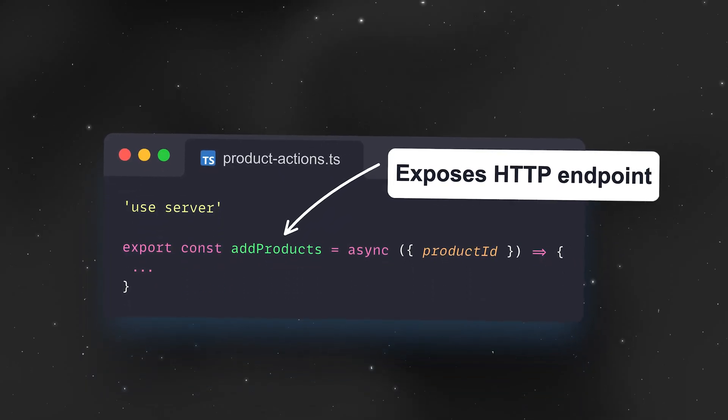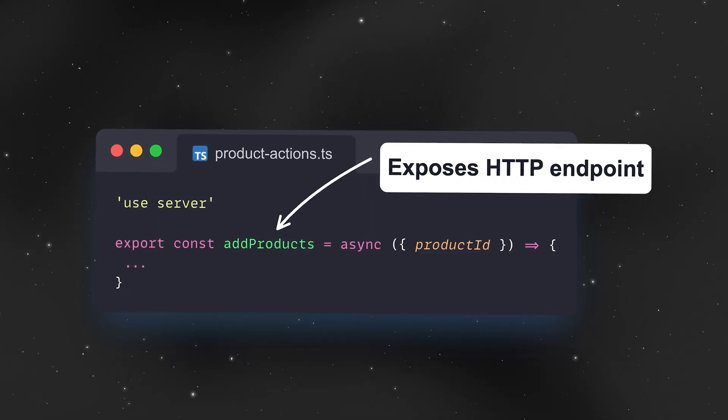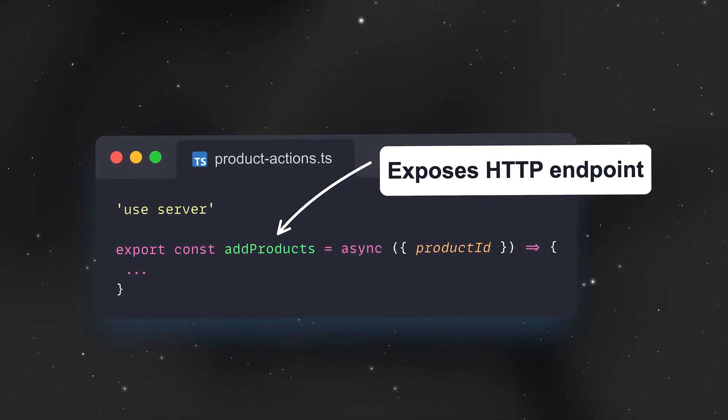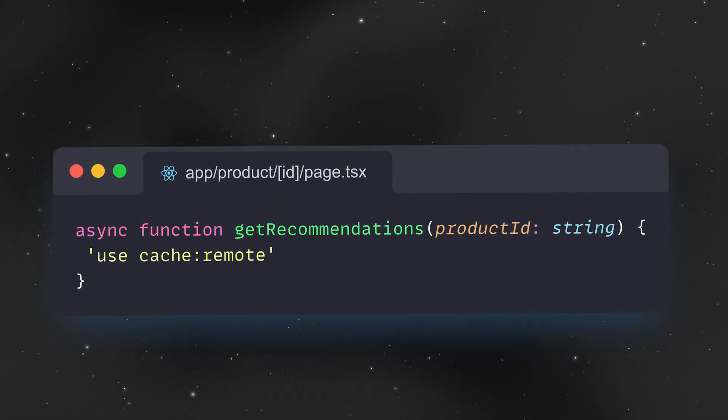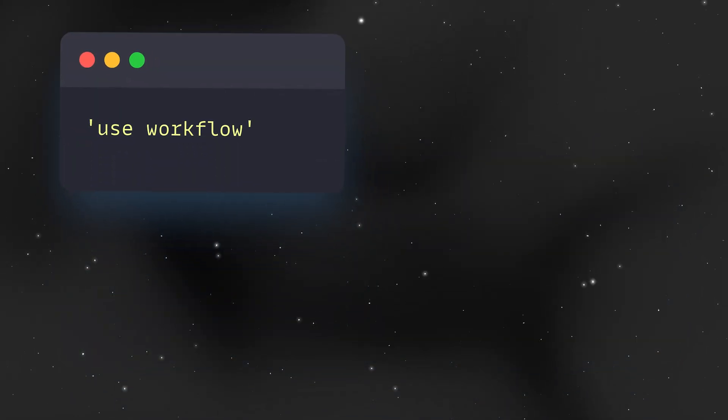At first we had 'use server', which allowed you to expose functions as HTTP endpoints, also known as server actions, and then 'use client' to mark components. But now we have 'use cache', 'use cache remote', 'use cache private', 'use workspace', 'use step', and everything is 'use blank', which is why a lot of devs are roasting it.